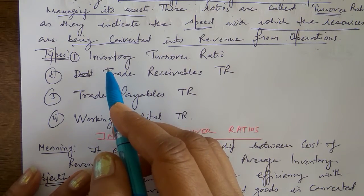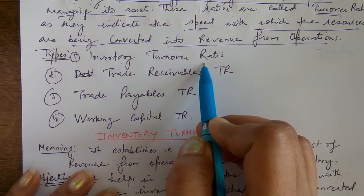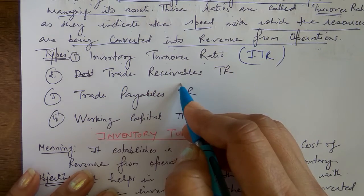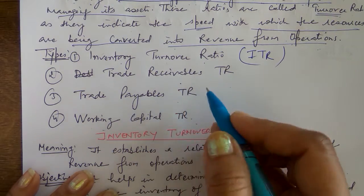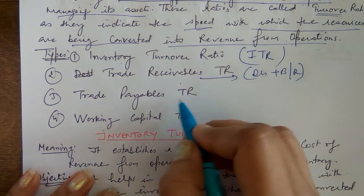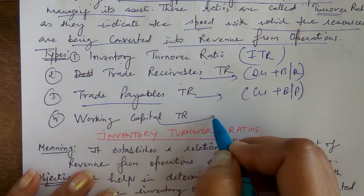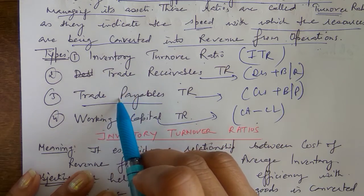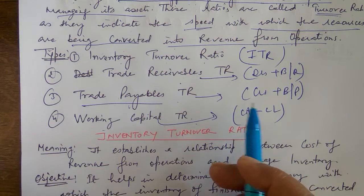The types of activity ratios we will discuss in this topic are: inventory turnover ratio (ITR), trade receivable ratio, trade payable ratio, and working capital turnover ratio. Trade receivables include debtors plus bills receivable; trade payables include creditors plus bills payable; and working capital is current assets minus current liabilities.